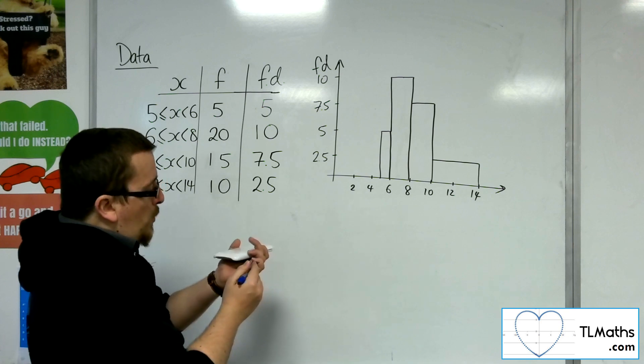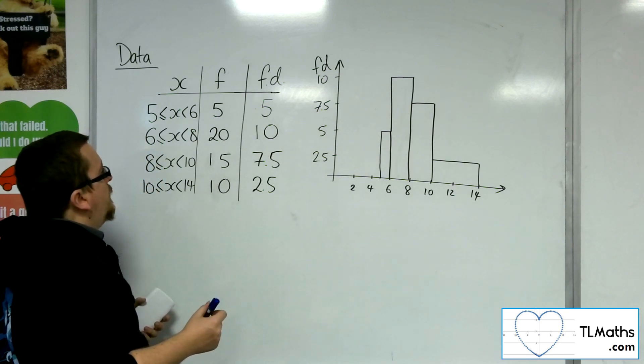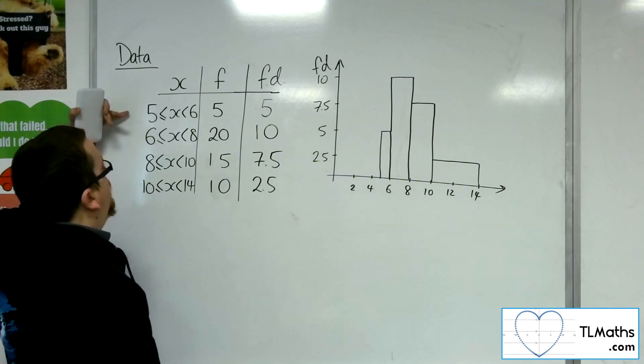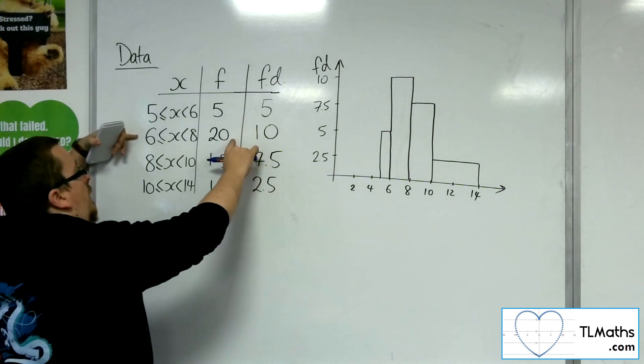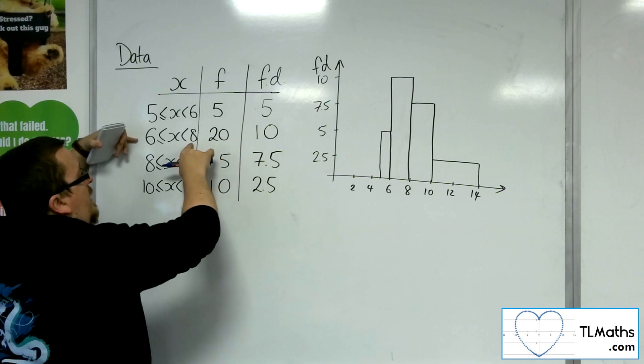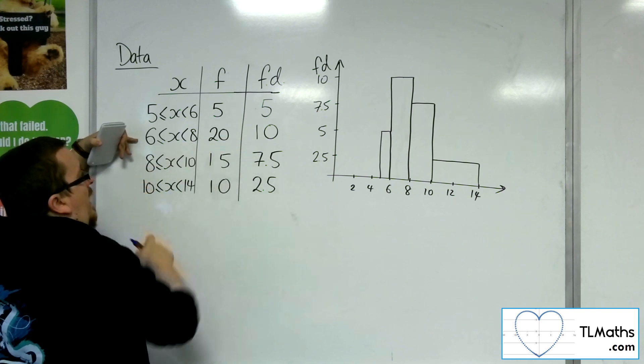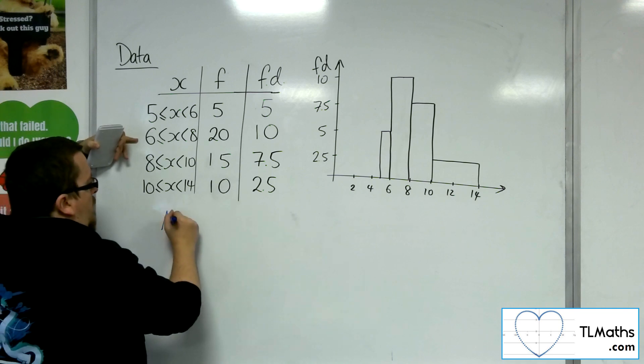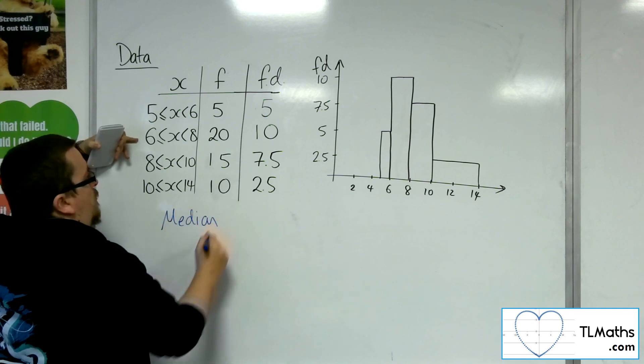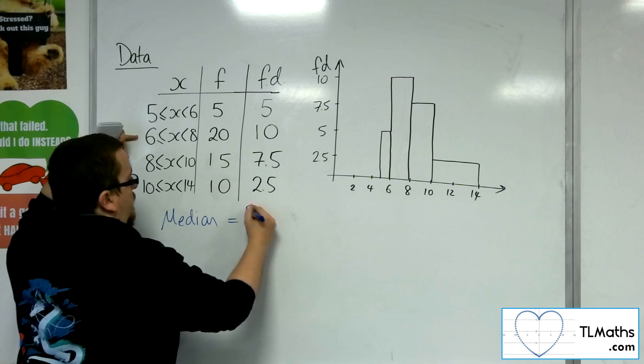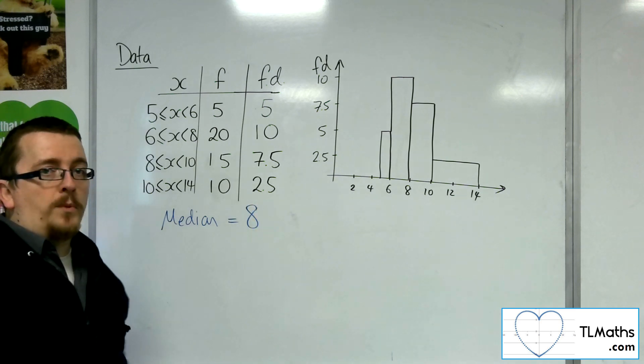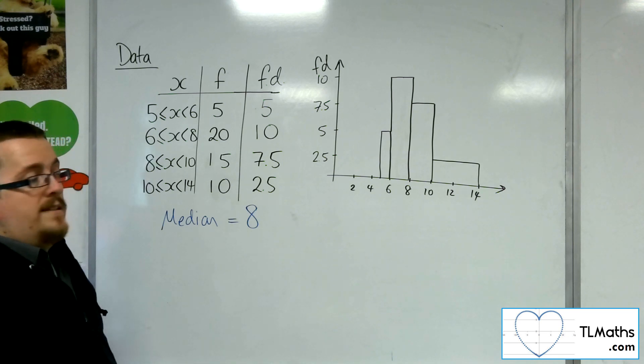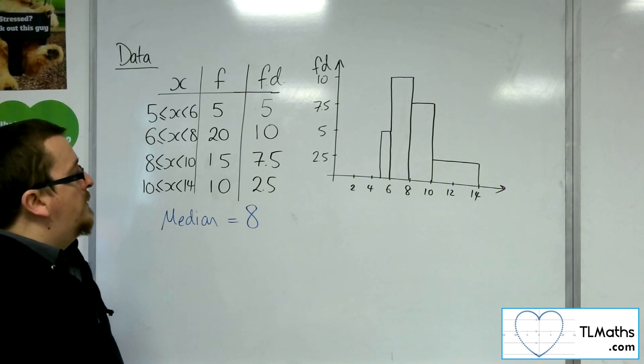So we'll be looking at the 25th value along. So for this one, conveniently, 5 and 20 make 25. And so right at the end of that point, that 8, would be the 25th value. So the median directly from this would just be 8, because the 25th value would be right at the end of that grouping. So it makes sense that the median is 8 from this diagram.